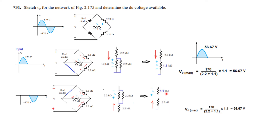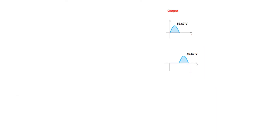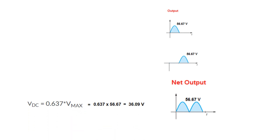By voltage division rule: 170 V divided by the two resistance combinations multiplied by 1.1, giving 56.67 volts again. Since the current flows in the same direction in both half cycles, this terminal remains positive. Both half cycles produce a positive output, so we get a full positive wave shape — a full wave rectifier output.